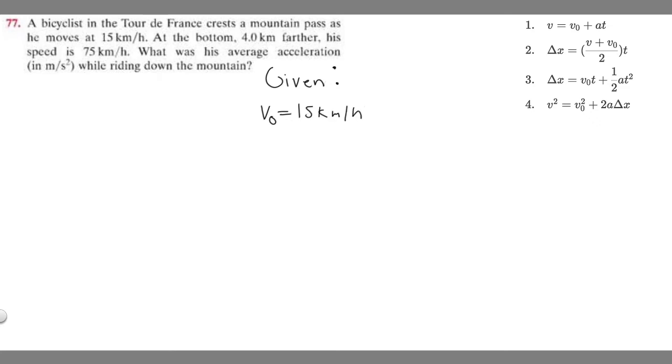We know this because he starts at this velocity and then goes to this. So this is going to be our final velocity, which we represent by v. So 75 kilometers per hour. He starts at this velocity, then he ends up at this velocity.